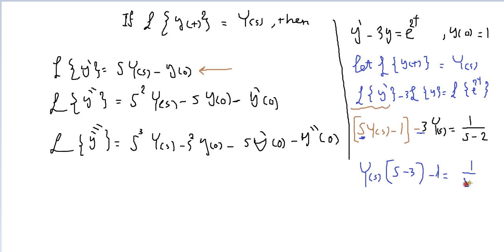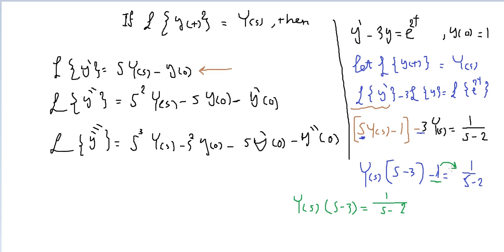So we have Y(s)·(s − 3) minus 1 = 1/(s − 2). Add 1 to both sides: Y(s)·(s − 3) = 1/(s − 2) + 1.